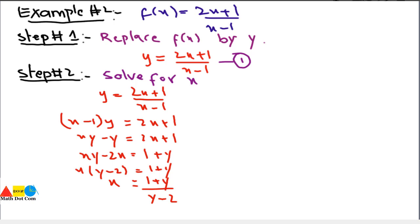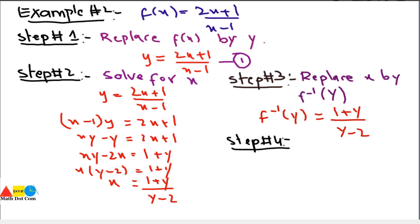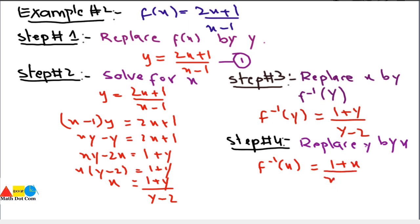Step number 3 is to replace x by f⁻¹(y): f⁻¹(y) = (1 + y)/(y - 2). Step number 4 is to replace y by x, giving f⁻¹(x) = (1 + x)/(x - 2). This is the inverse of the given function.